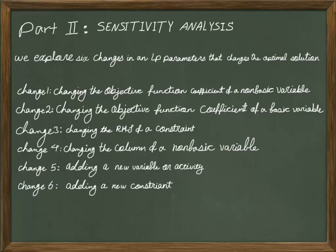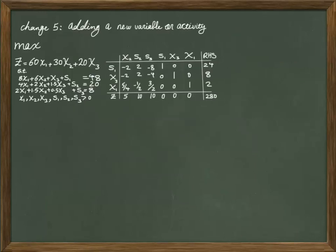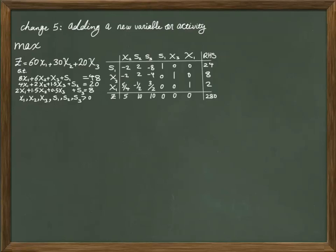In this lesson, we are going to investigate change 5, which is adding a new variable or activity in a linear programming problem. To understand the impact of adding a new variable or activity, you can think about this linear programming problem as a production plan for a manufacturing plant. Adding a new activity in this scenario is equal to adding a new product to the pool of products that you are already producing.